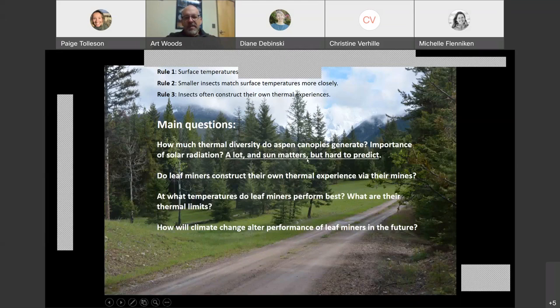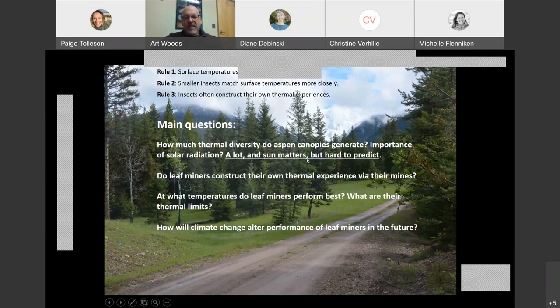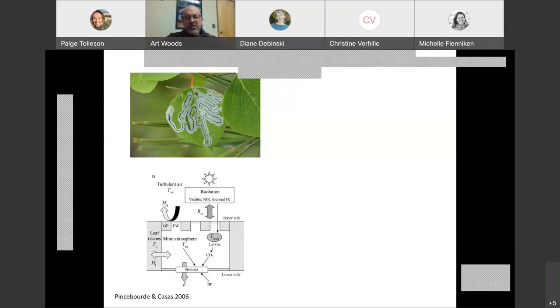There's a lot of diversity, the sun matters, but it's hard to predict quantitatively what the temperature of a particular leaf is going to be at a particular time. What about this idea that the insect herbivores themselves are constructing their own experience?